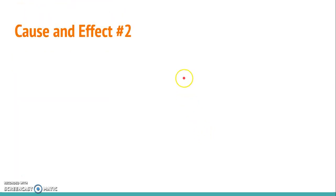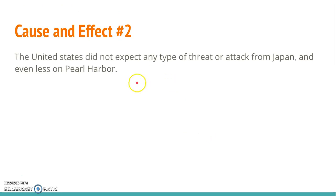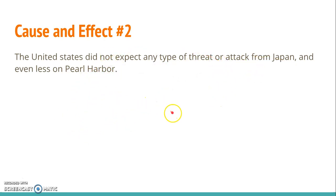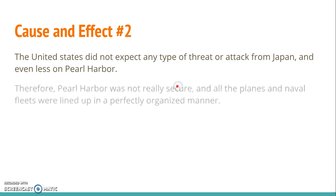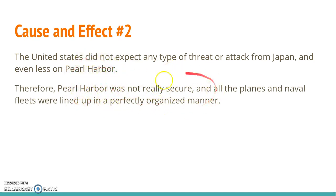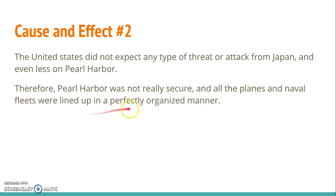The second cause was that the United States didn't expect any type of threat or attack from Japan, and even less so on Pearl Harbor, because Pearl Harbor was located far away from them. The U.S. thought that if Japan attacked anyone, they would attack Europe or neighboring countries. For that reason, Pearl Harbor wasn't really secure — the U.S. wasn't really worried about Pearl Harbor getting attacked.